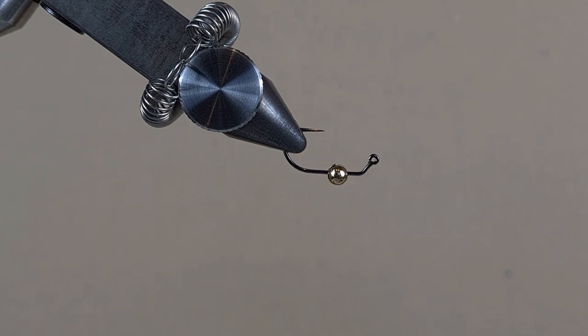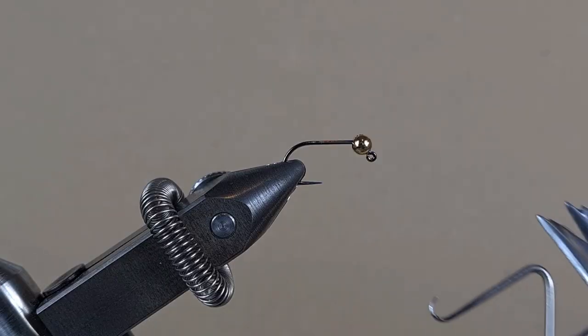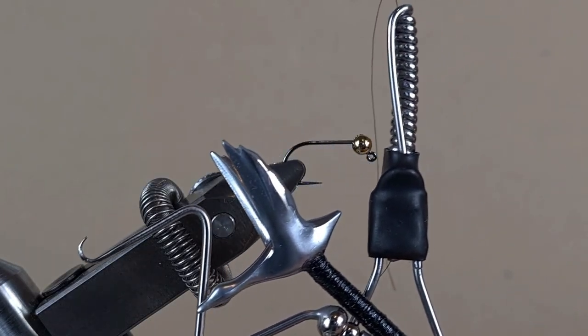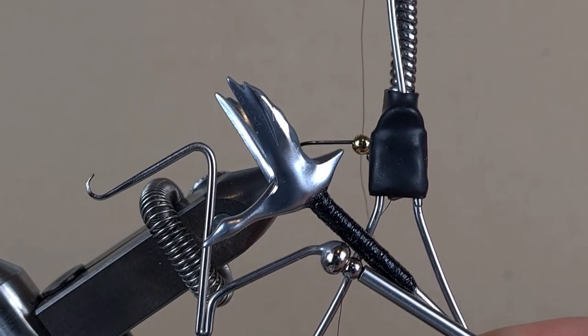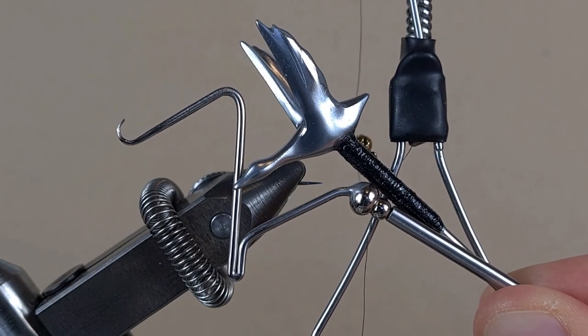I have a jig hook in device size 8 with a 4mm tungsten bead. These are the tools I'm going to use. If you want to know how to make any of them, I'll leave the link in the description.